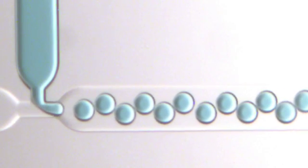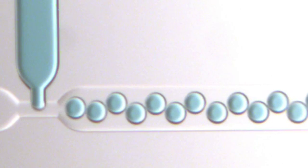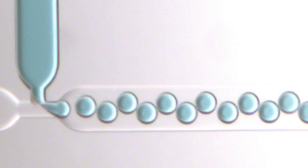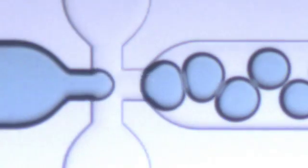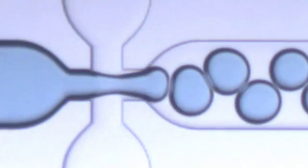The Mitos pump handles two independent channels simultaneously. Water and oil meet at the flow focusing junction, and water droplets form with narrow size distribution and consistent production rate.